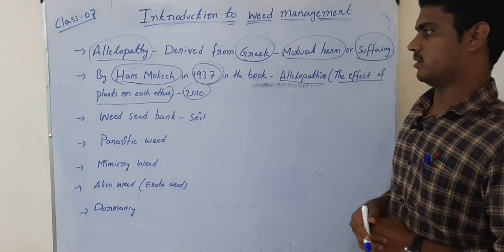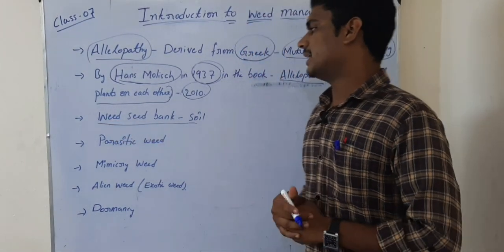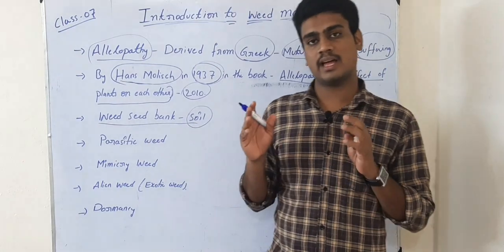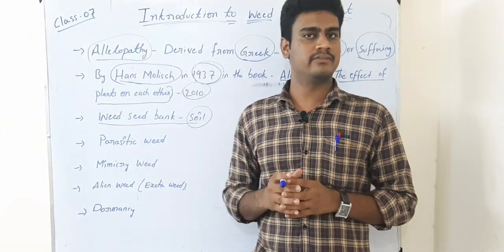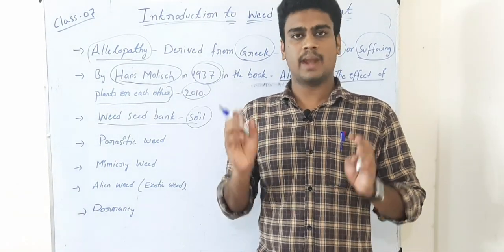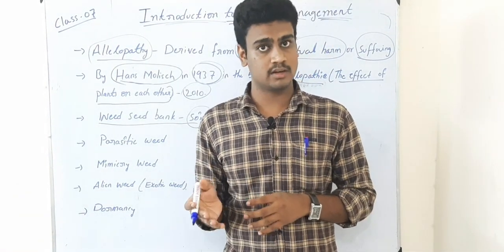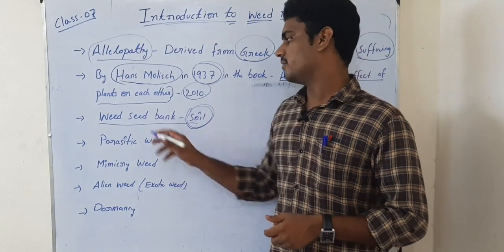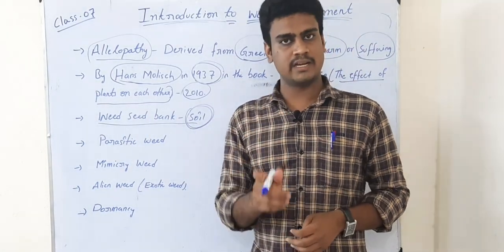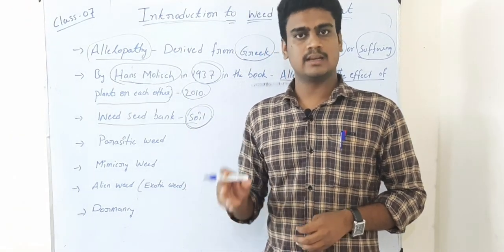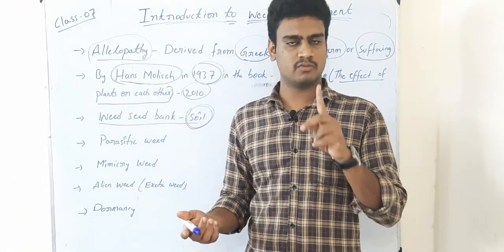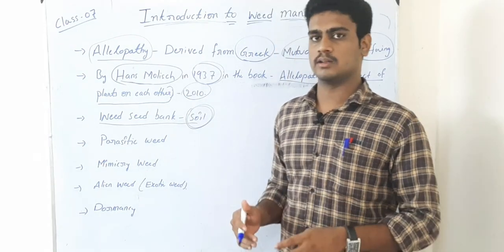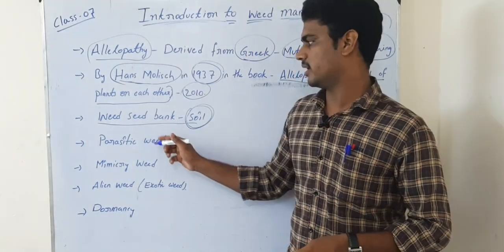Soil is called the weed seed bank. Weeds have a special character — they are prolific seed producers, meaning each plant can produce hundreds or even thousands of weed seeds. Those seeds remain in the soil, so one plant can become thousands of plants in the next season. Because the soil stores all these seeds like a bank, it is referred to as the weed seed bank.